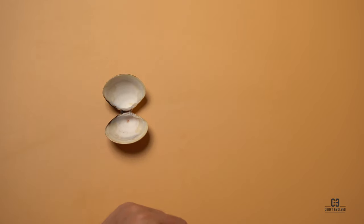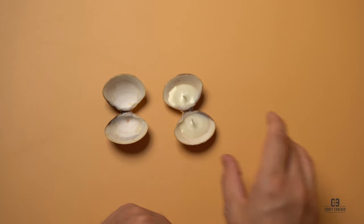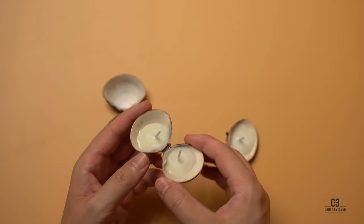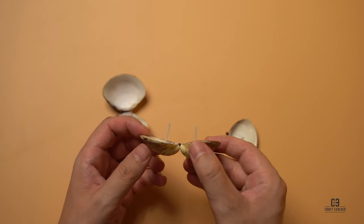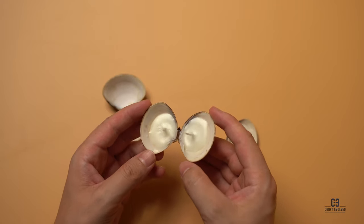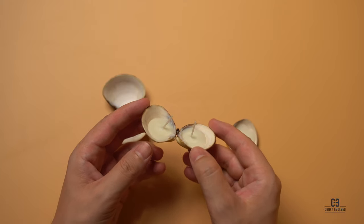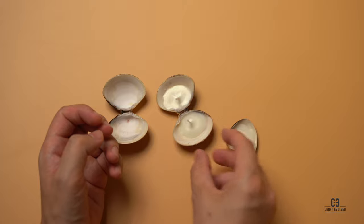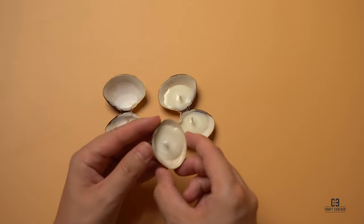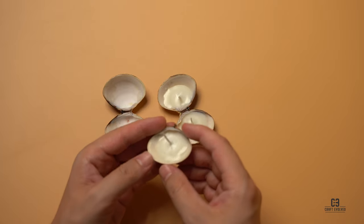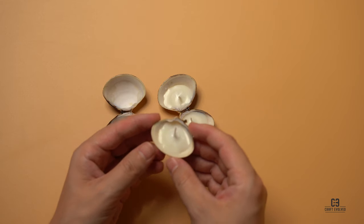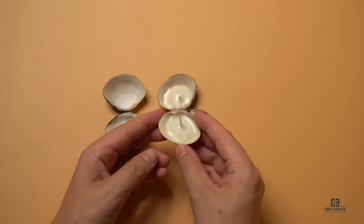And this is how the final seashell tea light candles look like. I am very pleased with the final looks. This handmade candle can be used as a decoration or can be used as a gift for anyone, for the occasion. The candle making kit I was using today is by Craft Evolved and I will leave the link in the description below.